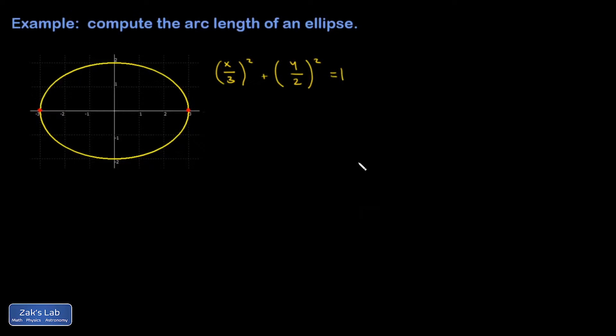And I'm going to go ahead and solve this for y. And I'm going to keep only the positive y's. So we're going to look at the upper half of the ellipse. So just this. And then we're going to double the result.